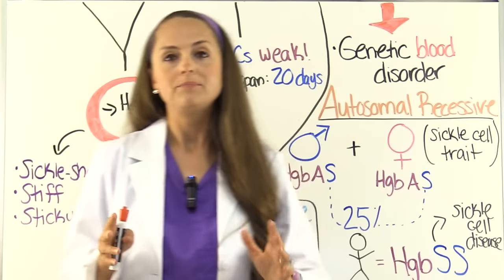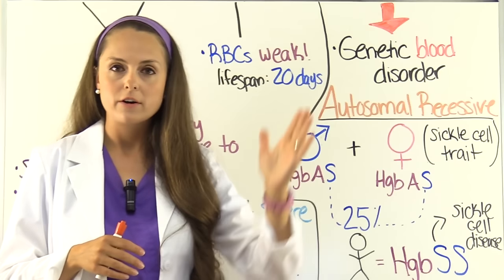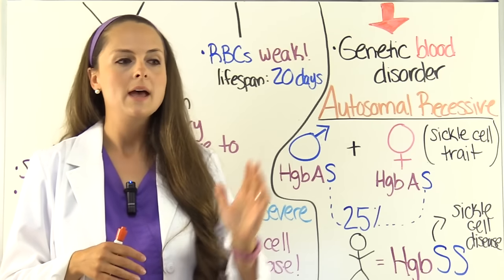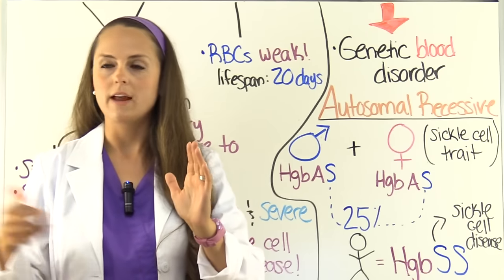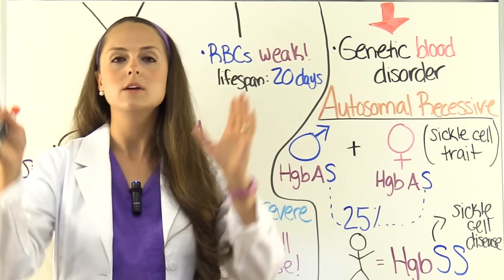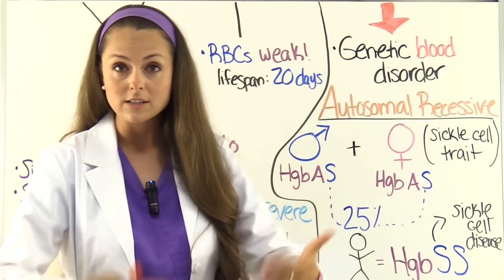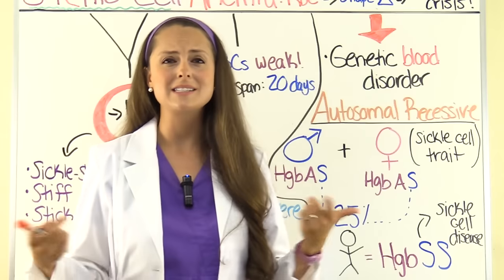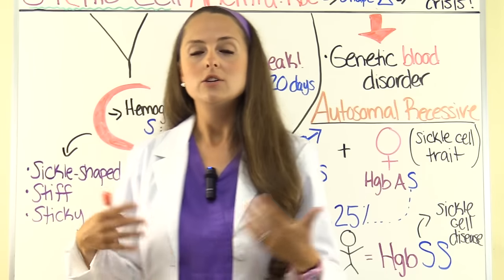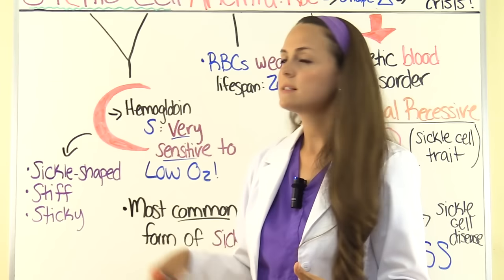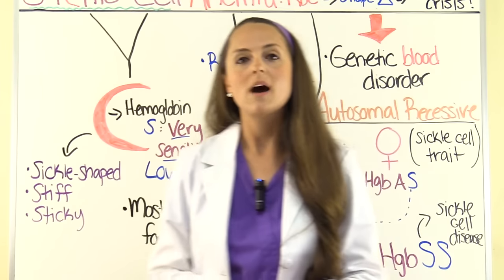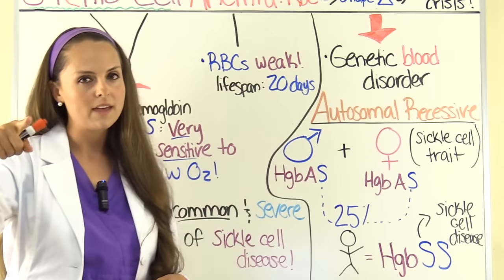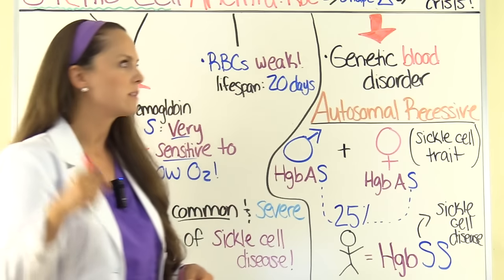Why does this present now and not at birth or at two or three months of age? In utero and during that first six months of life, the baby has fetal hemoglobin, which is the main transporter of oxygen. But as the child grows to six, seven, or eight months of age, fetal hemoglobin's role diminishes, and the hemoglobin SS encoded in their genes from mom and dad starts to take over — which is very sensitive to low oxygen, causing the red blood cells to start to sickle.